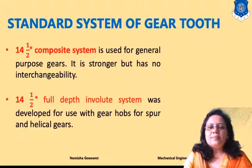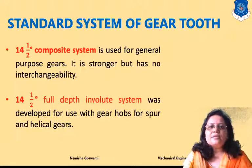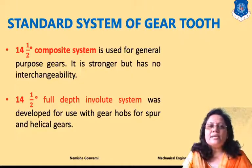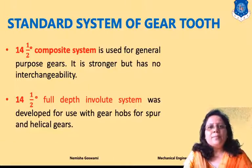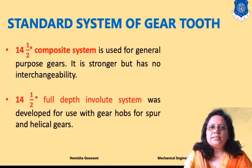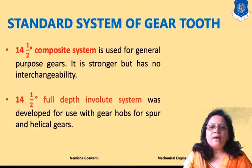The 14 and a half degree composite system is used for general purpose gears. These are stronger but have no interchangeability — you cannot replace a gear made with this system with one of a different pressure angle. This standard cannot be changed.